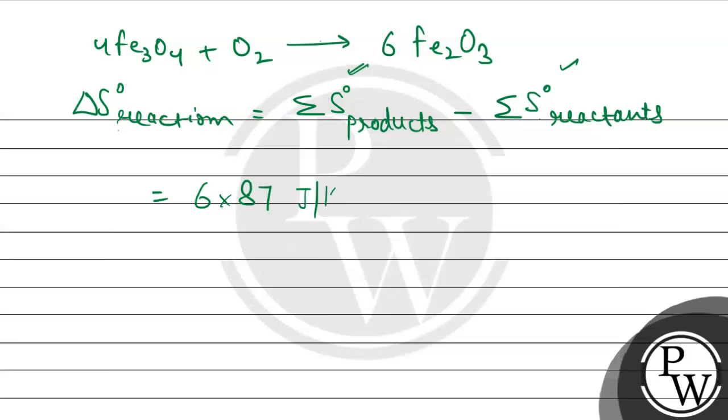The entropy given is 87 joule per kelvin, so 87 joule per kelvin minus for the reactants which we have to do the sum first. And here we have the 4Fe₃O₄, for Fe₃O₄ we have to find, so here we can write it as 4 multiplied to the S° for the Fe₃O₄.